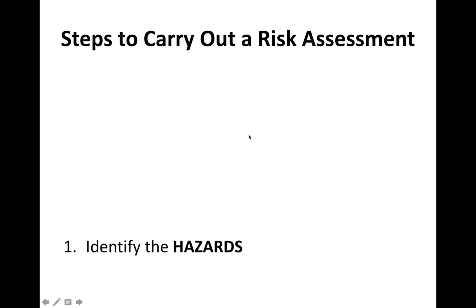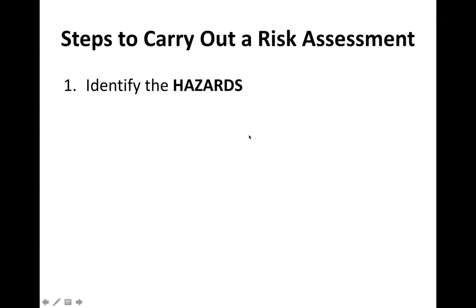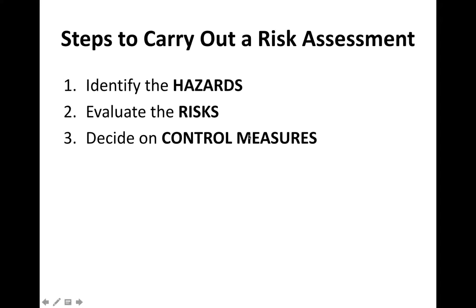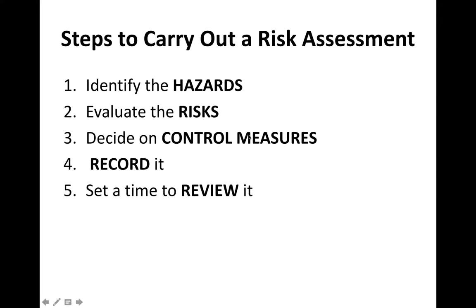The steps to carrying out a risk assessment: you must first identify the hazard — in other words, what could go wrong. Then evaluate the risk of that actually happening. Decide on a set of control measures to reduce that risk. Make sure all of this is recorded, and then set a time to review it in case anything has changed since the last time you set this up.